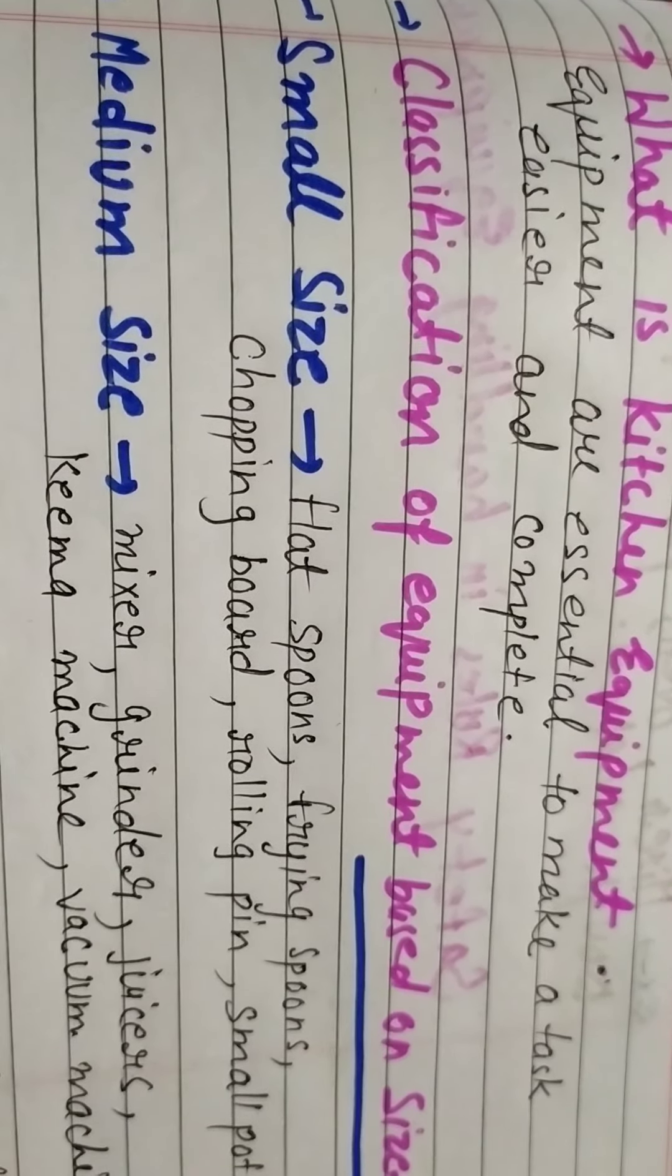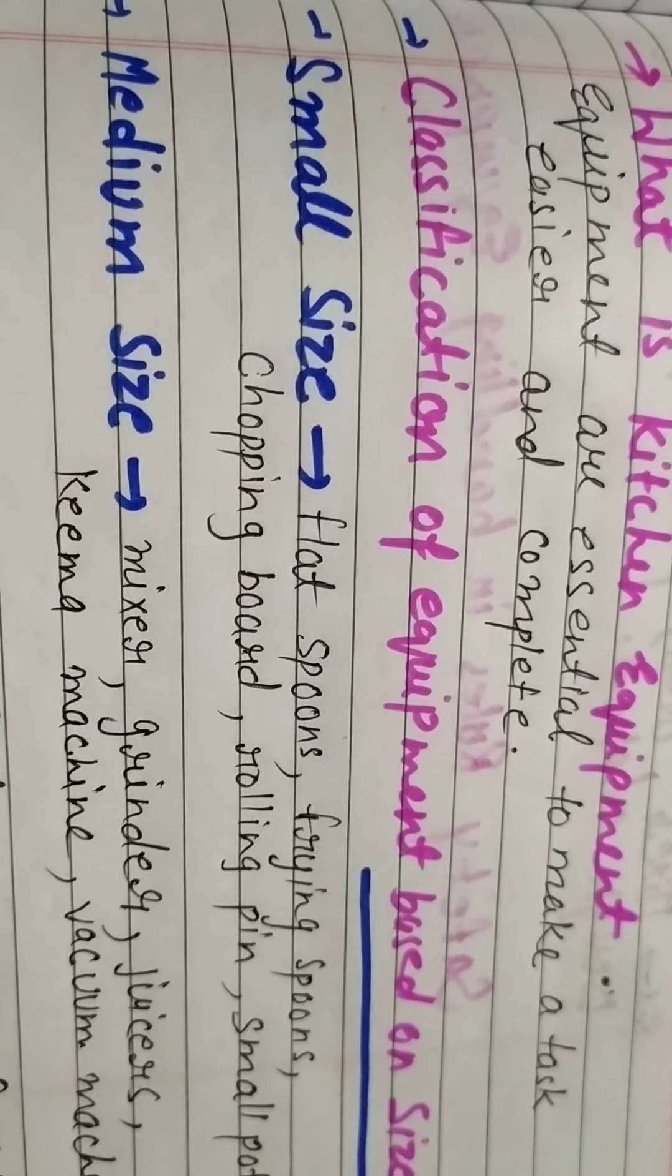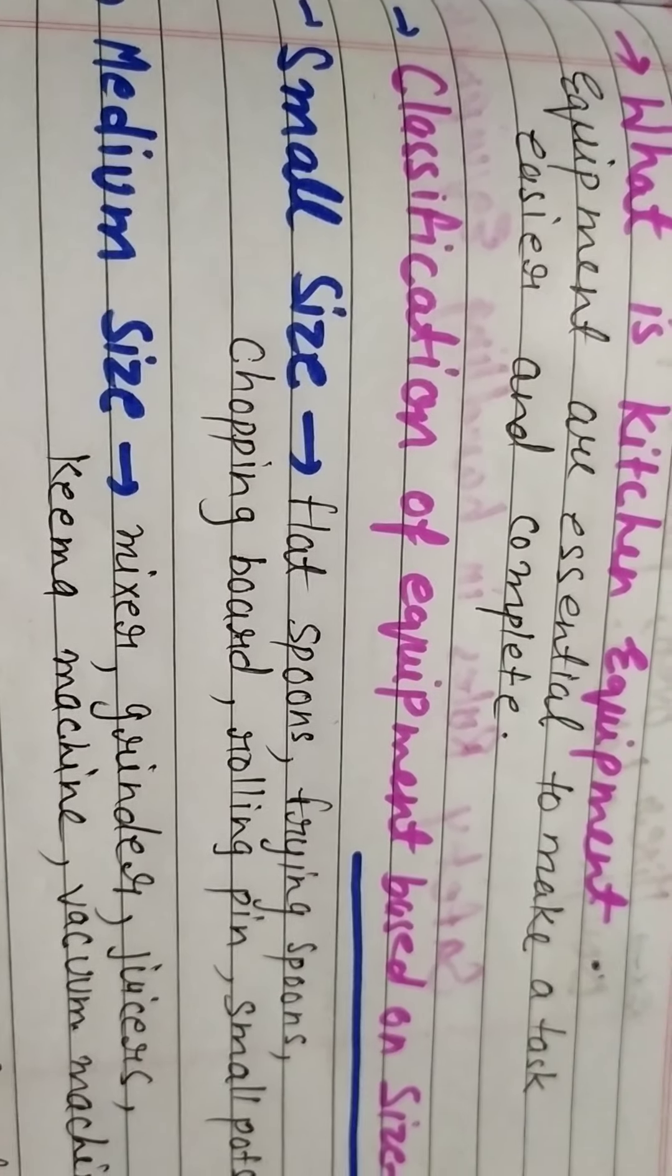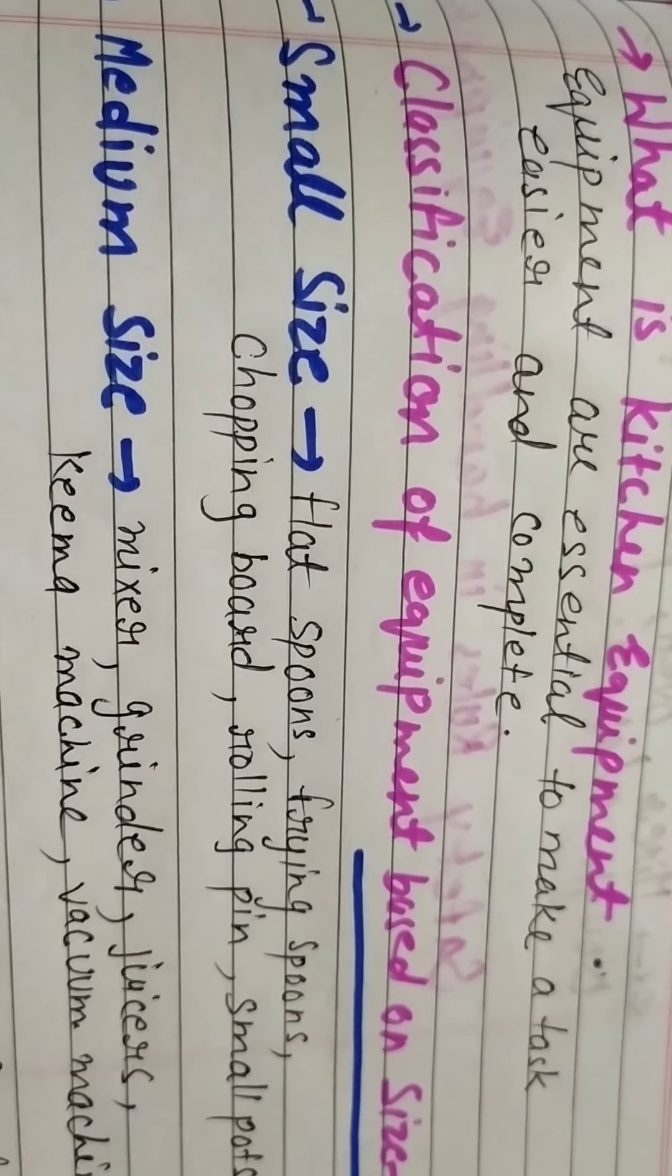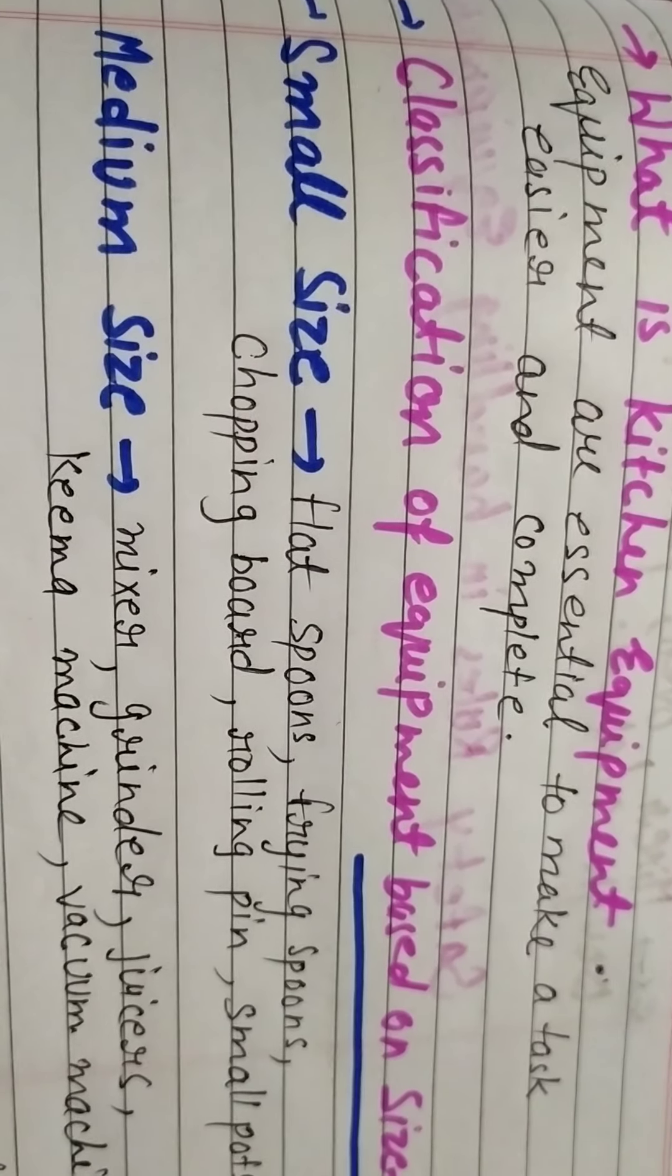First is small: flat, spoon, frying spoon, chopping boards, knives, peelers, plate, rolling pans, small pots, etc.